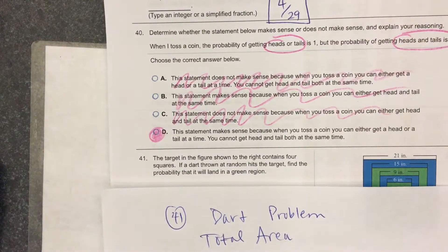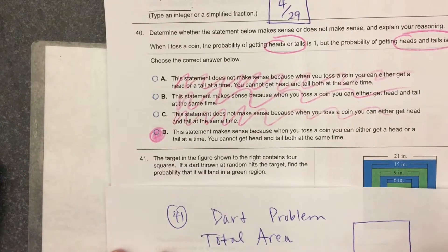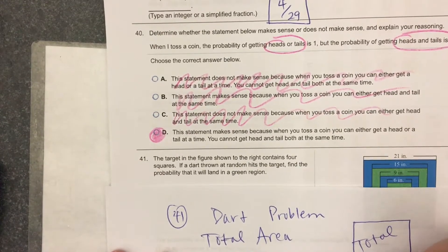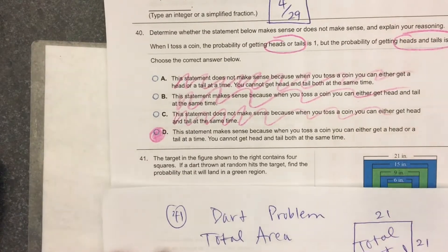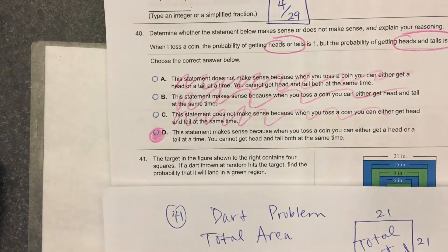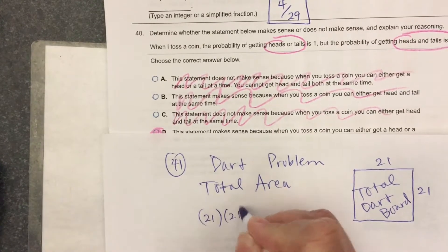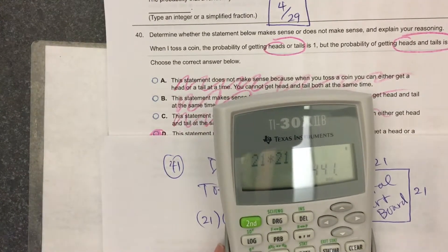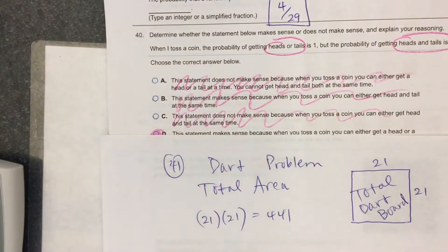How do you find the area of a square? Side times side. The total dartboard, here's my total dartboard. It's 21 by 21. So the total area is going to be 21 times 21. 21 times 21 is 441. That's the denominator of my probability problem.